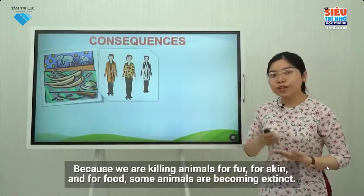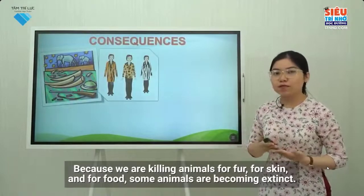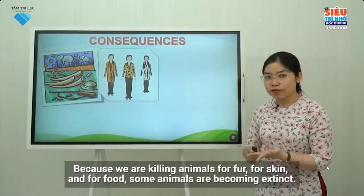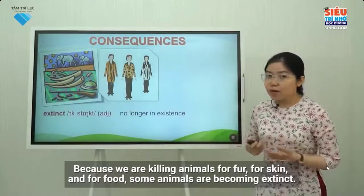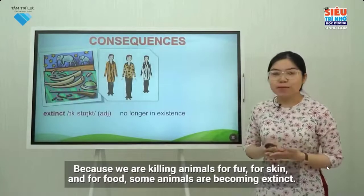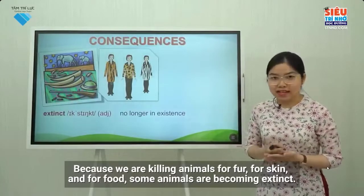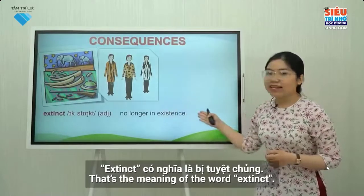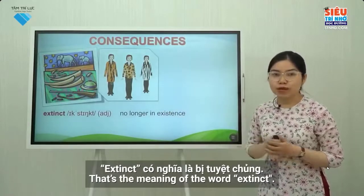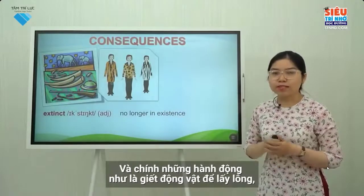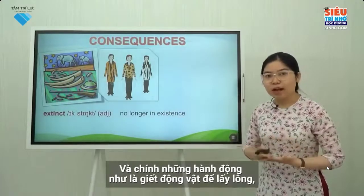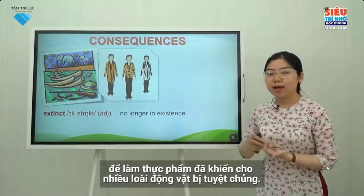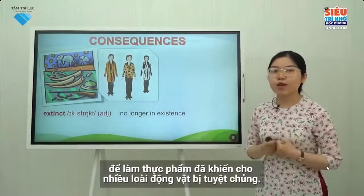Because we are killing animals for fur, for skin, and for food, some animals are becoming extinct. Extinct means no longer in existence. It's the action of killing animals for fur and for food that has driven many species of animals to extinction.